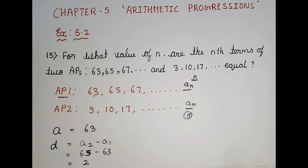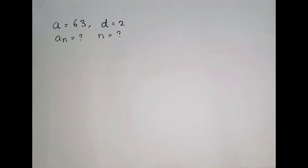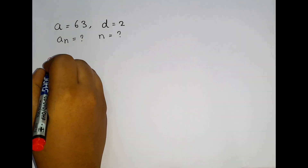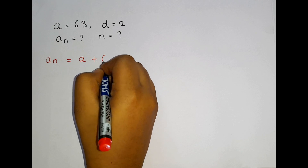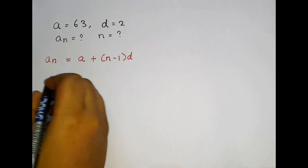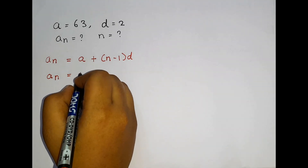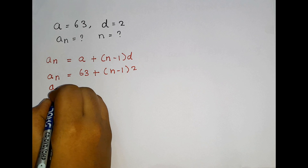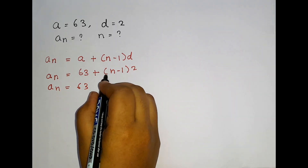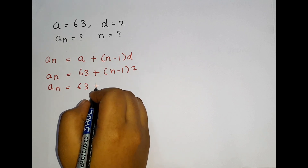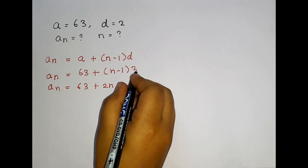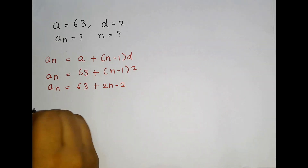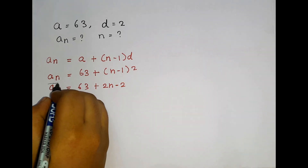Now let us substitute this value in the formula. Aₙ = a + (n − 1) × d. We don't know the Aₙ value as well as the n value. So Aₙ = 63 + (n − 1) × 2, which gives us 63 + 2n − 2. So this is the value for Aₙ₁.